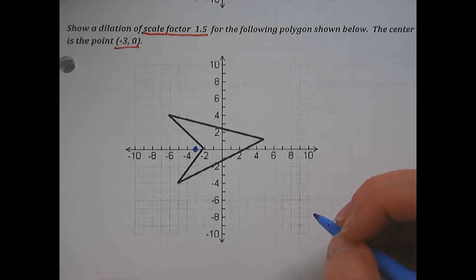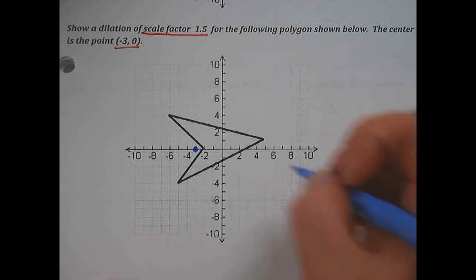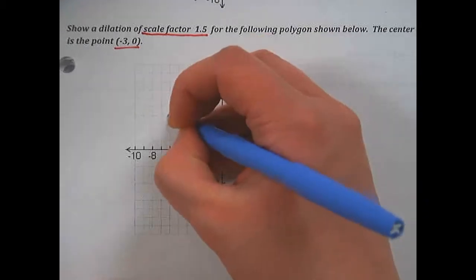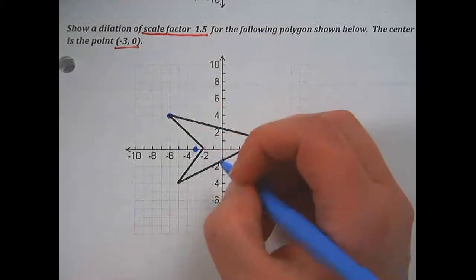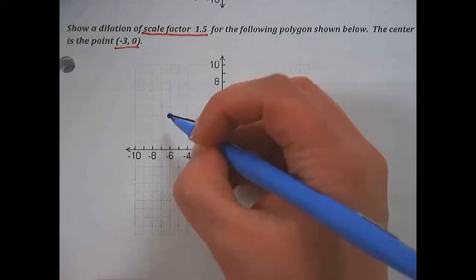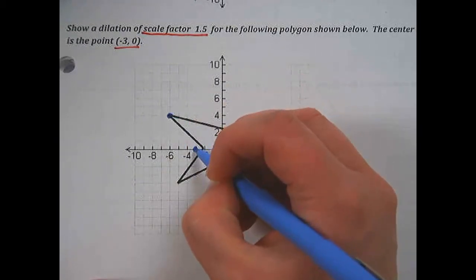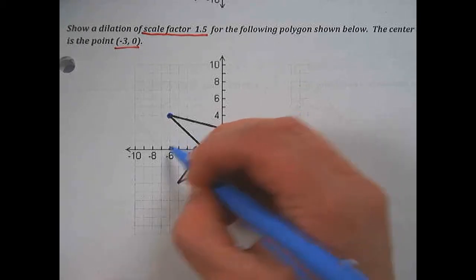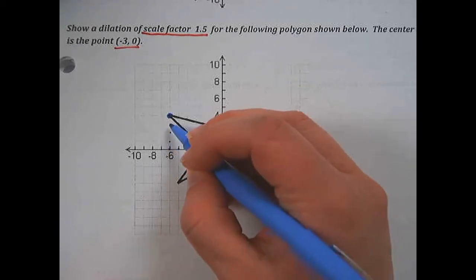I'm going to pick a point to start with, this one right here. I'll count the instructions from my center of dilation out to this point. I need to go left 1, 2, 3, and up 1, 2, 3, 4.